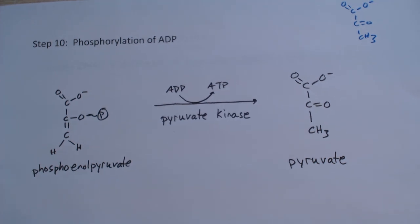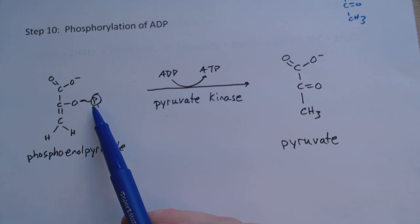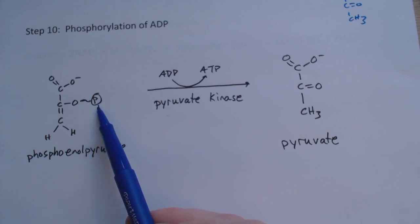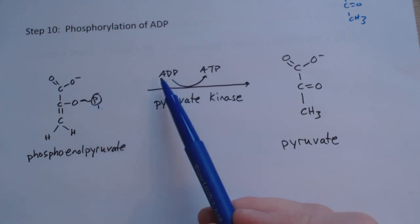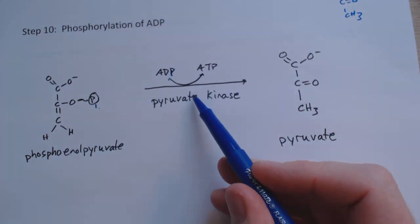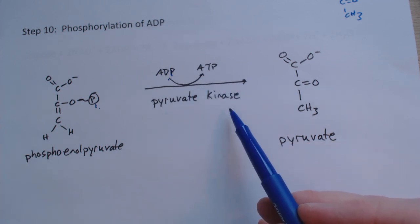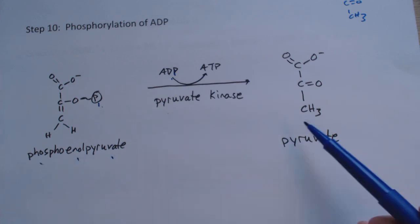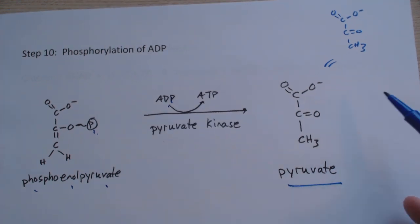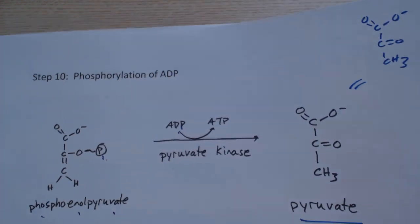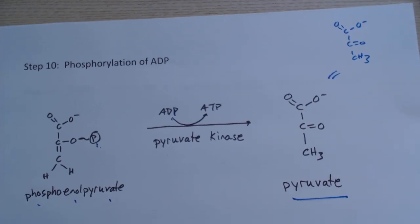The final step is phosphorylation of ADP to get rid of that phosphate. That's how we get rid of it - we shift it off onto an ADP, which turns into an ATP. This is through the use of pyruvate kinase. Phosphoenolpyruvate becomes the pyruvate. Each of these steps got us closer and closer to the shape of the pyruvate until we actually had it.